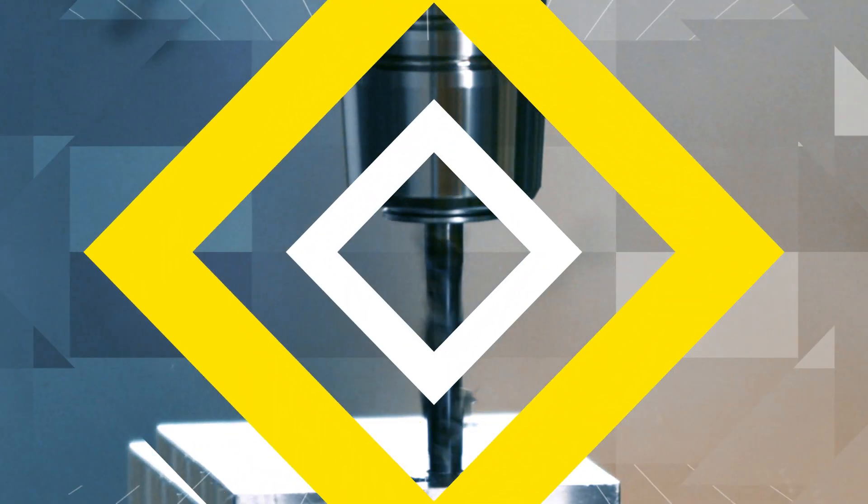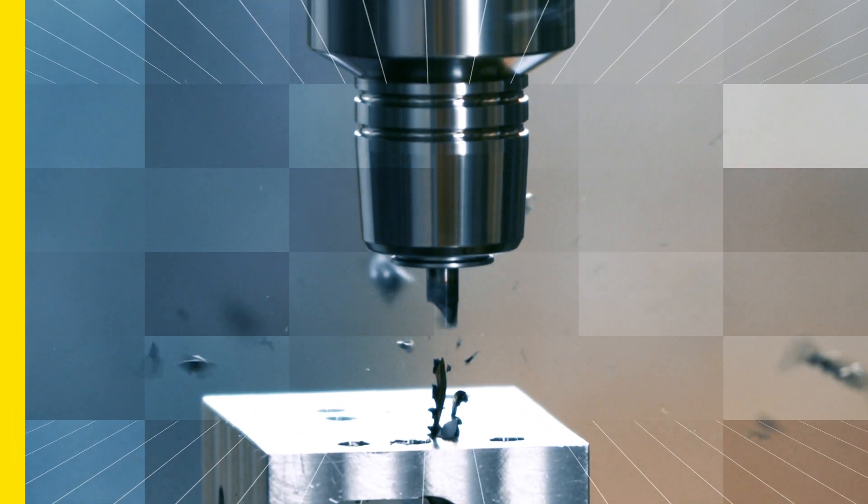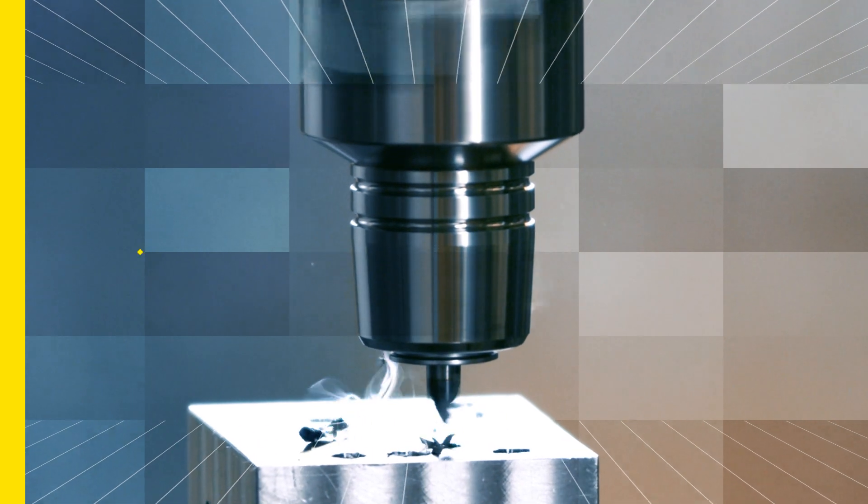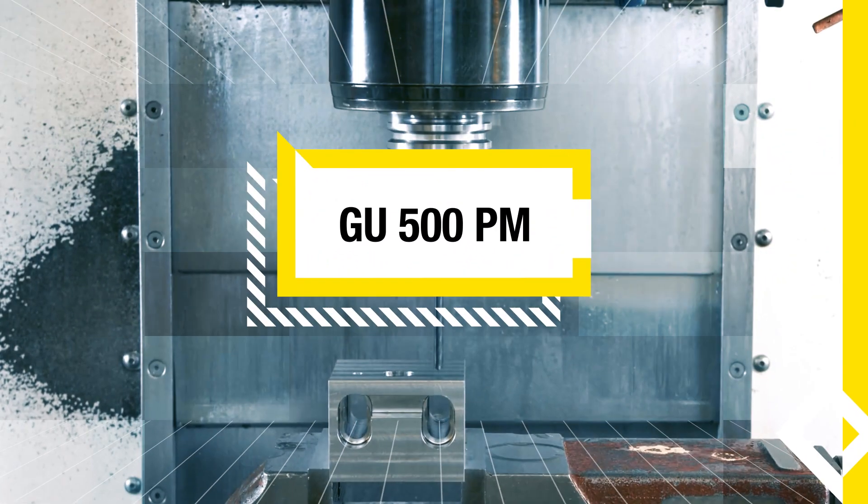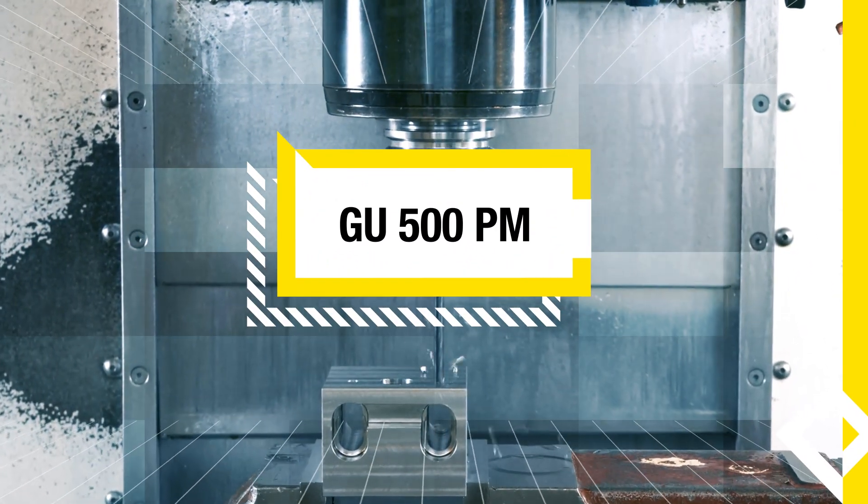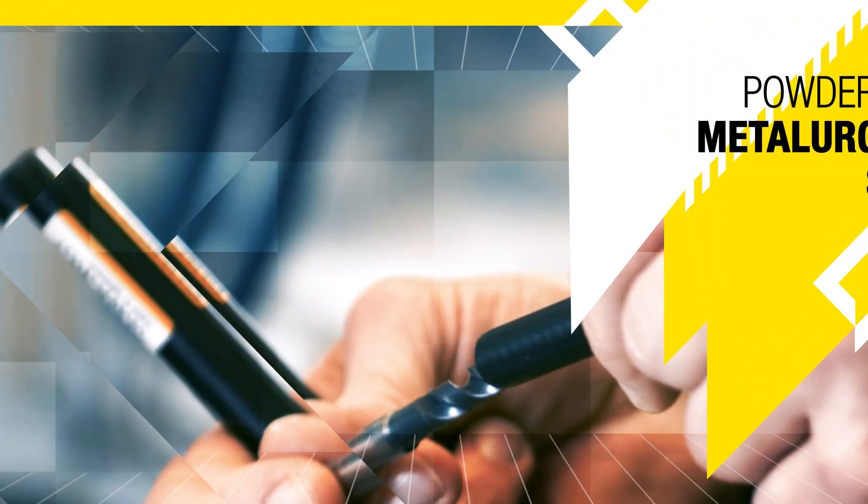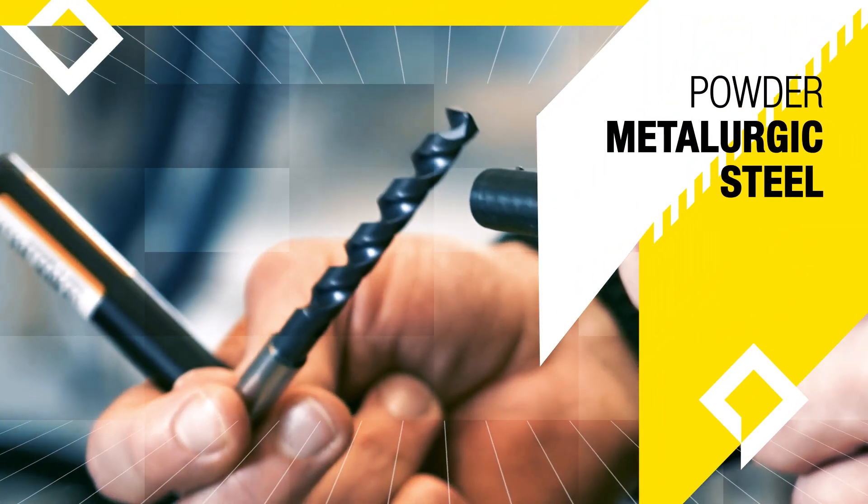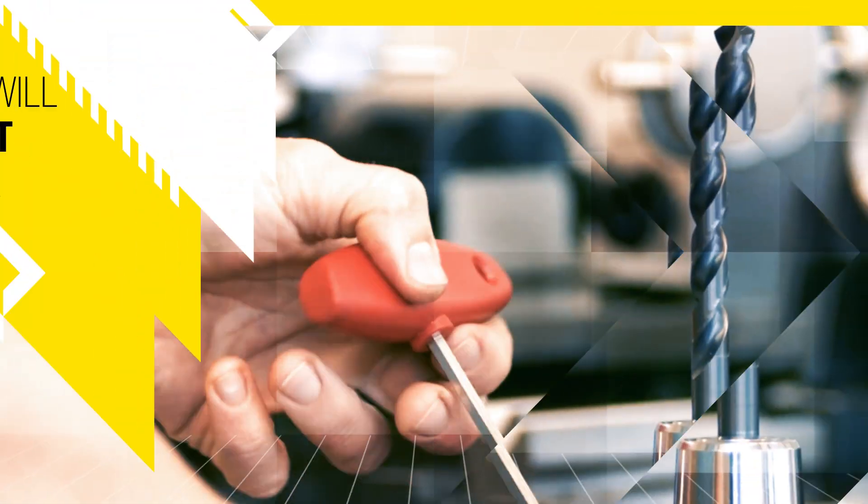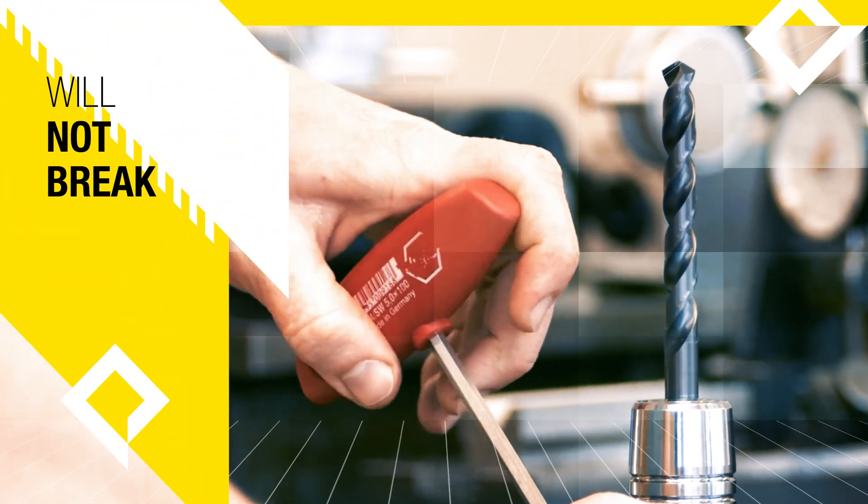Under unstable conditions, carbide tools can break. The new GU500PM can bend. Made of best powder metallurgic steel with high toughness and flexibility, it will not break.